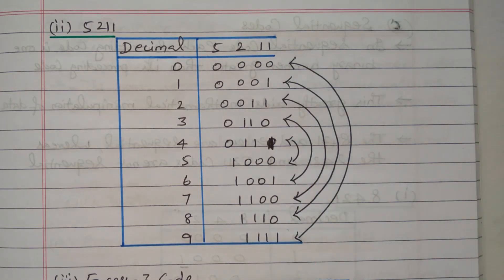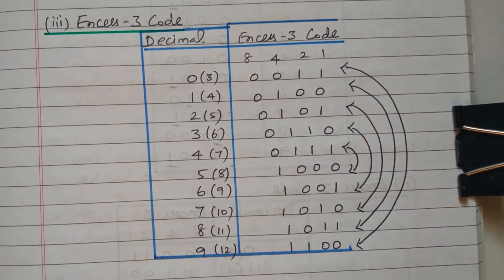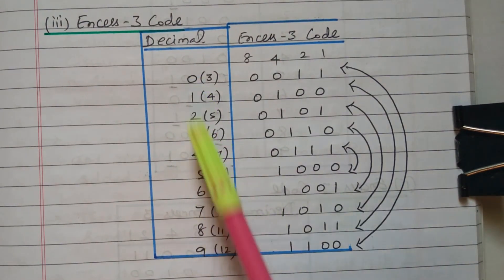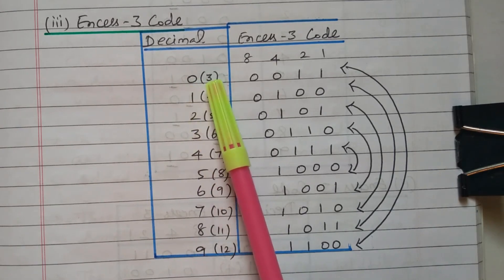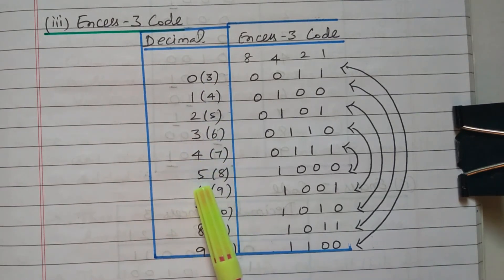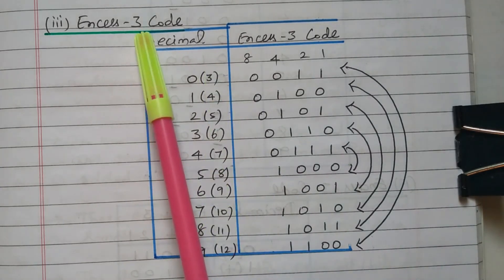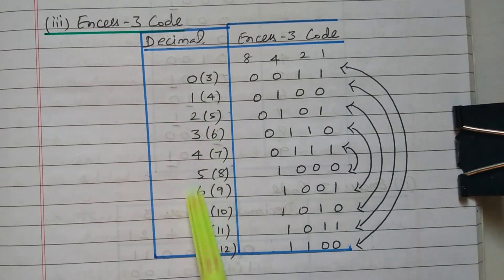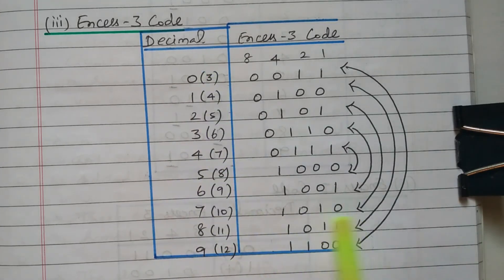Now we will go to the XS3 code. This third code is the XS3 code, which also comes under the reflective code. XS3 means we need to add 3 to each decimal number. So: 0+3=3, 1+3=4, 2+3=5, 3+3=6, 4+3=7, 5+3=8, 6+3=9, 7+3=10, 8+3=11, 9+3=12. So XS3 maps the decimal numbers 0 to 9 into the range 3 to 12, and we need to frame the XS3 code for this range.